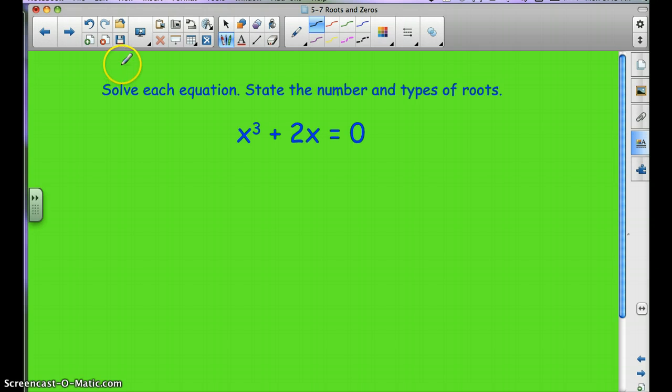So let's look at this one. Solve each equation. State the number and types of roots. So if we have, if we take out an x, we're left with x plus 2, x squared plus 2 rather, equals 0.